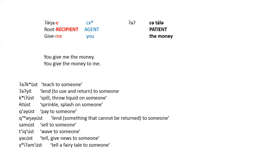Here are a few vocabulary words that take the recipient object: 'a-eat' — teach to someone; 'land-to-someone' — to use or return to someone; 'quit-boost' — spill or throw liquid on someone; 'quit-boost' — sprinkle or splash on someone; 'i-used' — pay to someone; 'so-most' — sell to someone; 'wave-to-someone'; 'quit-boost' — tell or give news to someone; and 'huyam-boost' — tell a fairy tale to someone.